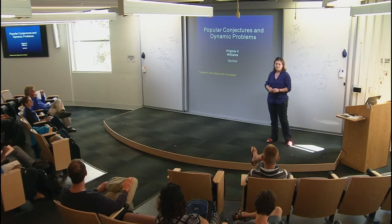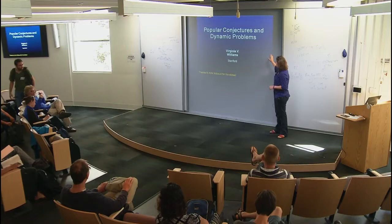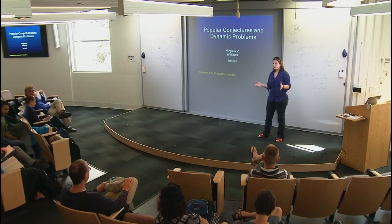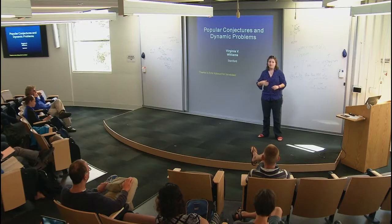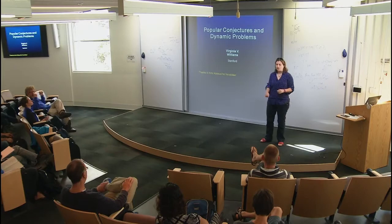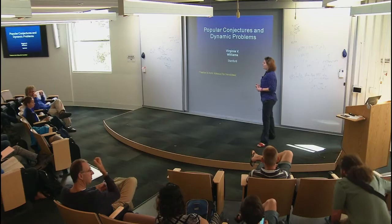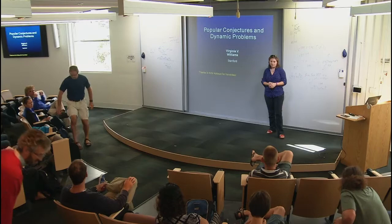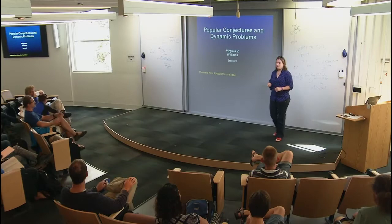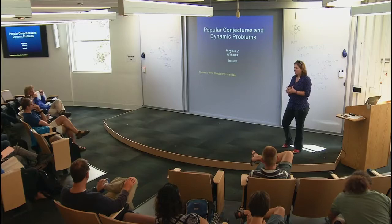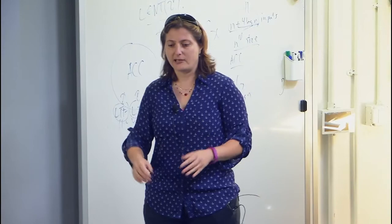I'm going to talk about popular conjectures and dynamic problems. A dynamic problem is one where you have some function you want to compute, you're given an input, compute the result, and then one at a time people give you updates to the input. While they're doing these updates, they can also ask queries: what is the output of the function right now? The trivial way to solve dynamic problems is to recompute the function from scratch. The central question of dynamic algorithms is when can you do better — when can you substantially improve on brute force recomputing everything from scratch?